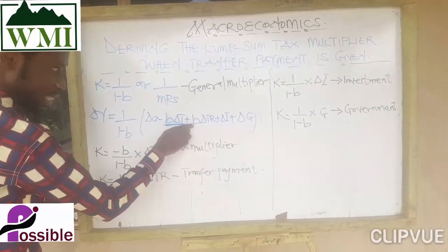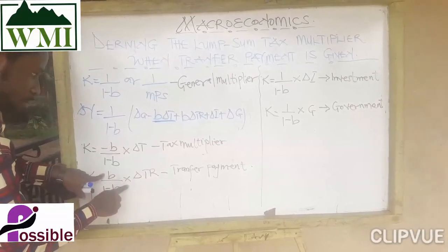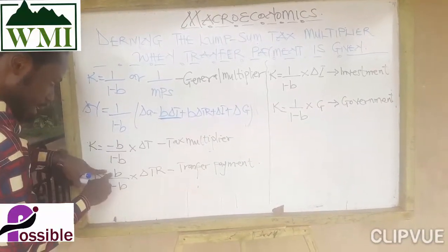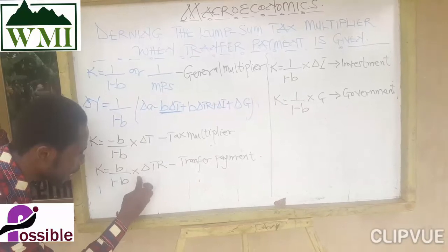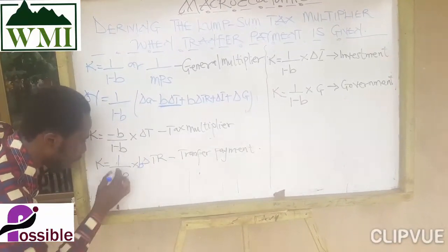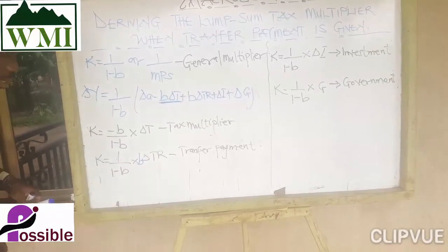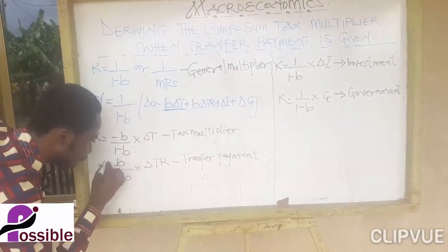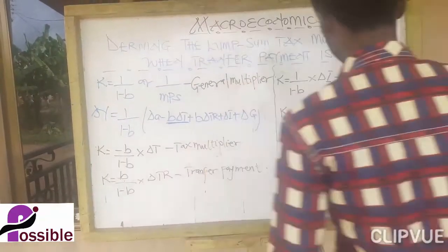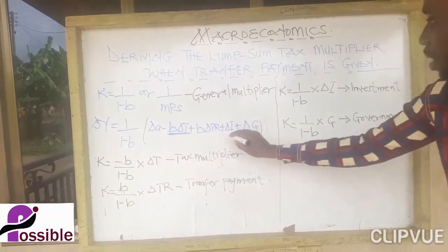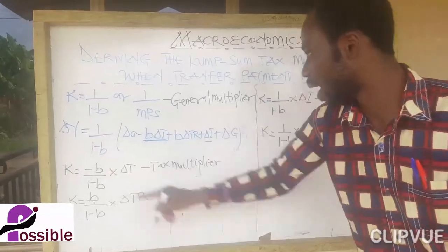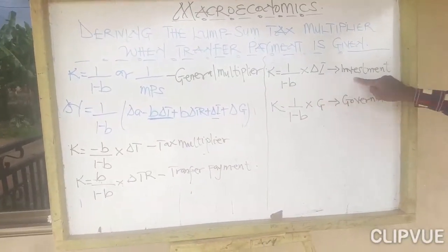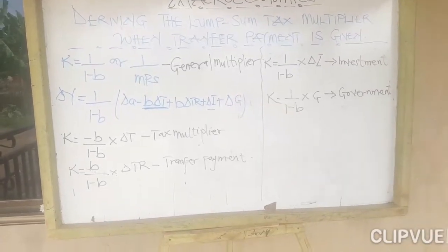The transfer payment multiplier: from the equation, the coefficient on TR is B, so the transfer payment multiplier is B over (1 minus B), which equals B over the marginal propensity to save, times change in transfer payment. The investment multiplier is 1 over (1 minus B), which is 1 over the marginal propensity to save, times change in investment.